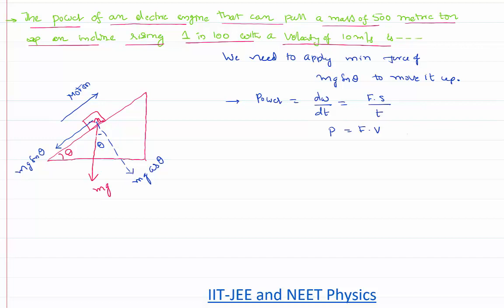So what is the value of F acting here? It is nothing but equal to mg sine theta, and then velocity v. That's the equation for the power that we are supposed to calculate.